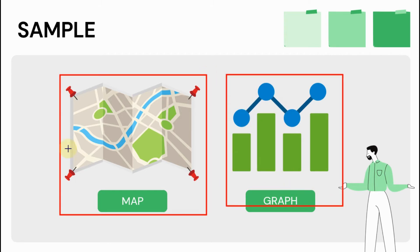The graphs and tables used to sell financial products are models of the expected performance of those products. All our interactions with the world around us depend on our internal mental models of how we perceive that world.